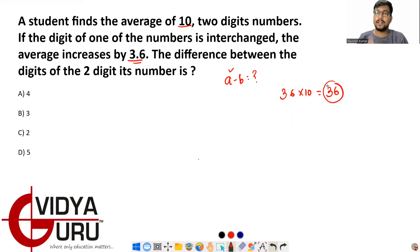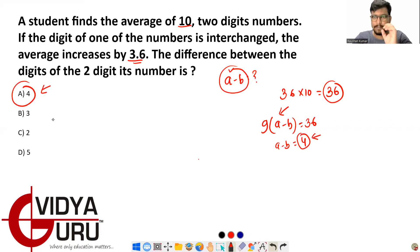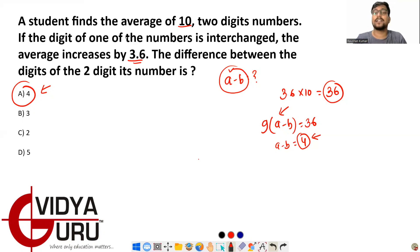This increase of 36 is the difference between the original number and its reverse. Using the subtraction concept: 9 × (a − b) = 36, so a − b = 36 / 9 = 4. The difference between the digits is 4, so the answer is option A = 4.